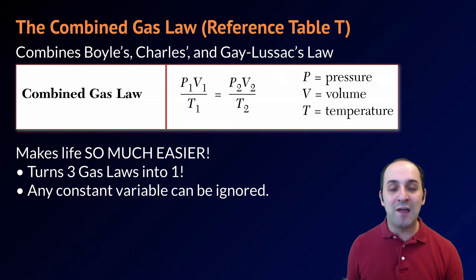Second, any variable that's held constant can be ignored, and if you do that, you're able to recover the individual gas laws. For instance, if we were to hold temperature constant, we can get rid of that. We then know that P1 times V1 is equal to P2 times V2, which if you remember, is Boyle's law.